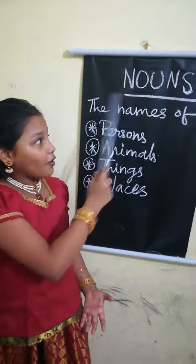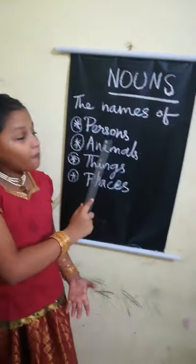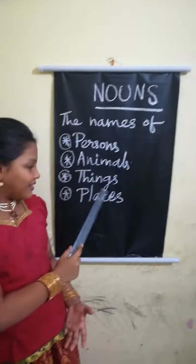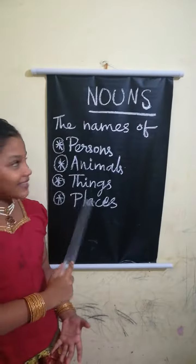Nouns are the names of persons, animals, things, and places.